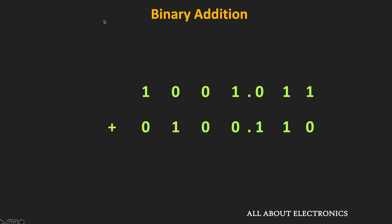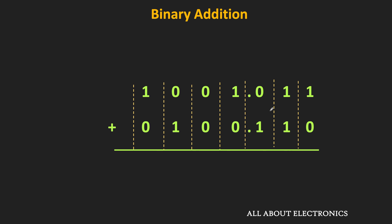Now let us see how to add two binary fractional numbers. The addition of binary fractional numbers is very similar. The binary point of the two numbers is placed one below the other, and then the same binary rules are followed. The addition is performed column by column, starting from the rightmost column. In the rightmost column, we have 1 plus 0, equal to 1. Moving to the next column, we have two 1s, so the addition is 0 with 1 as a carry to the next column.